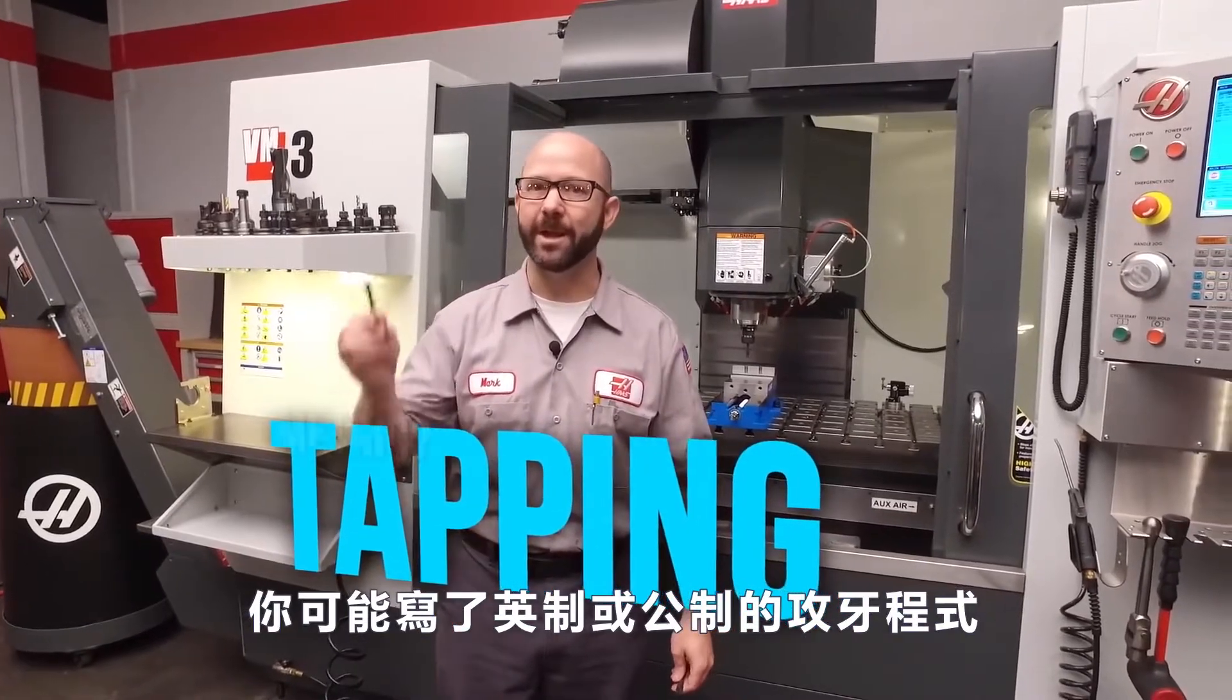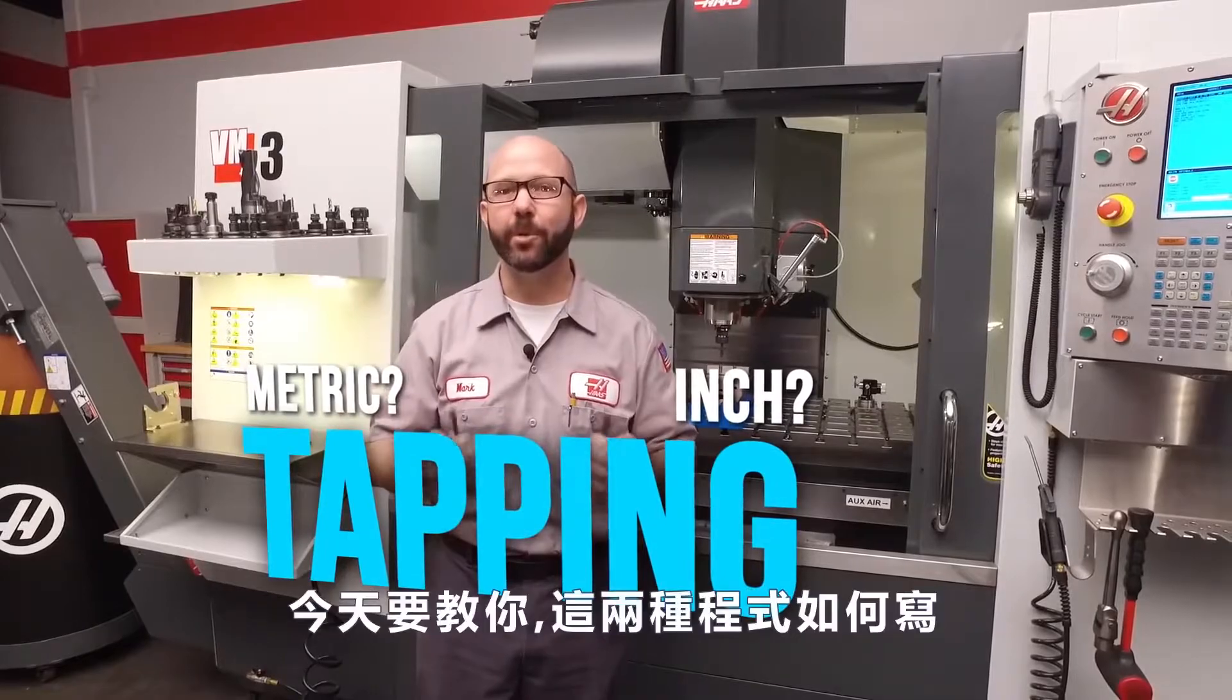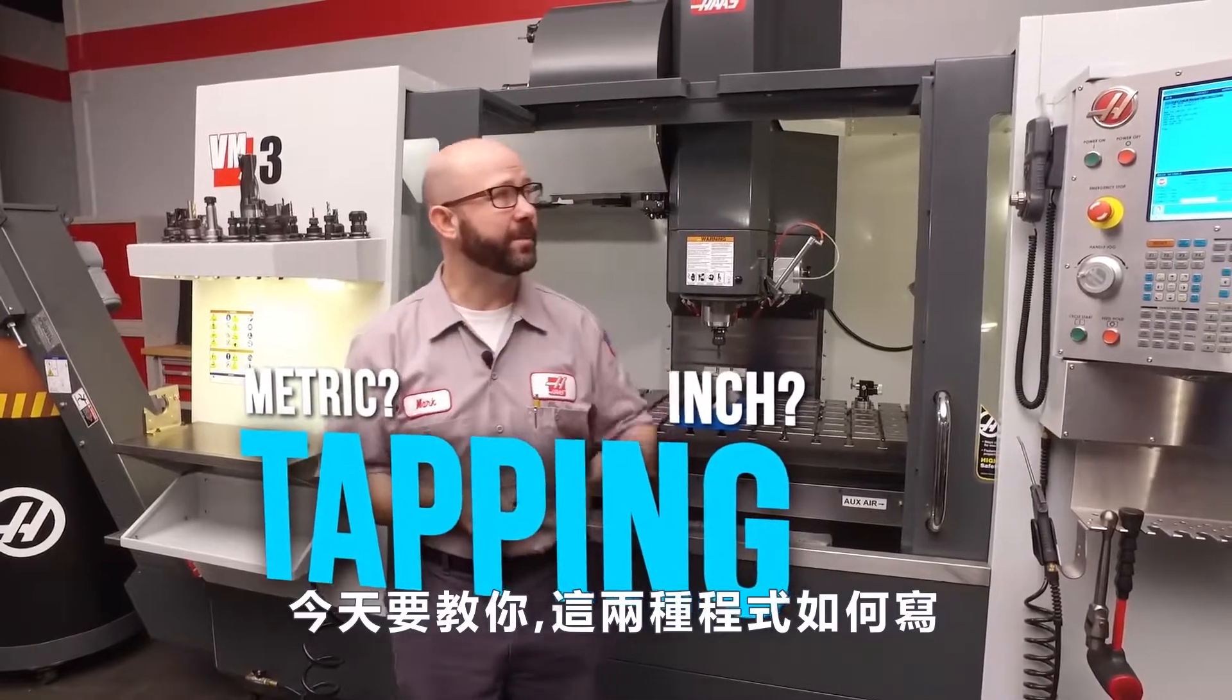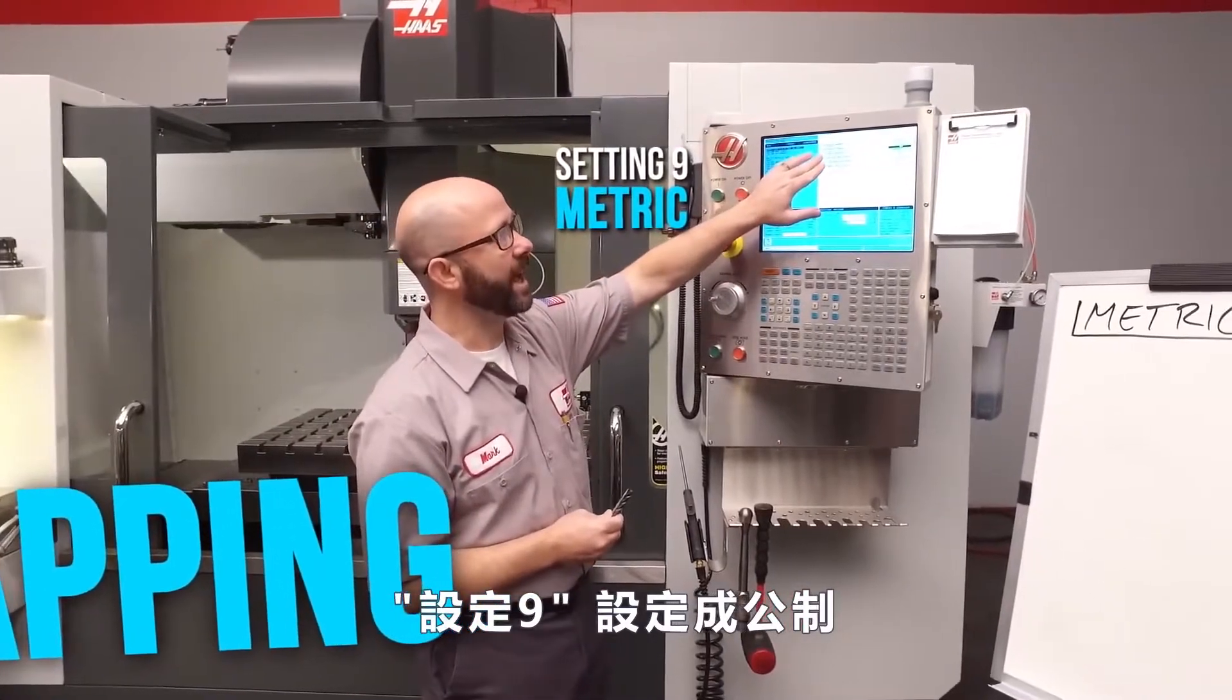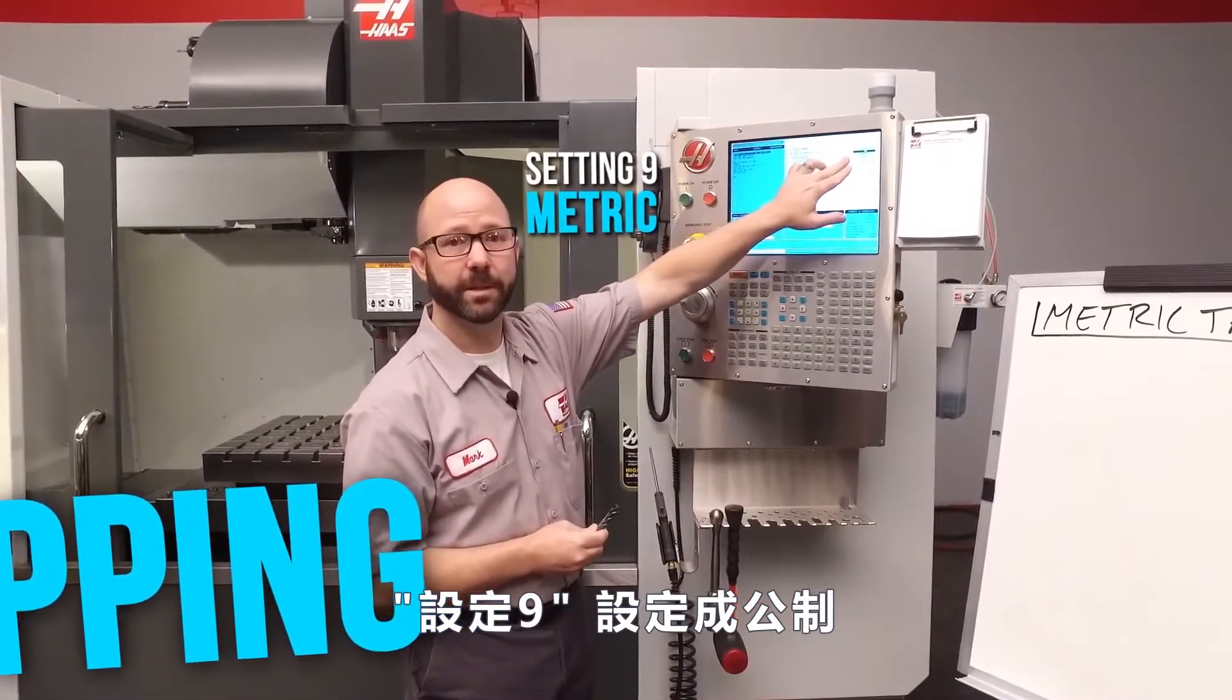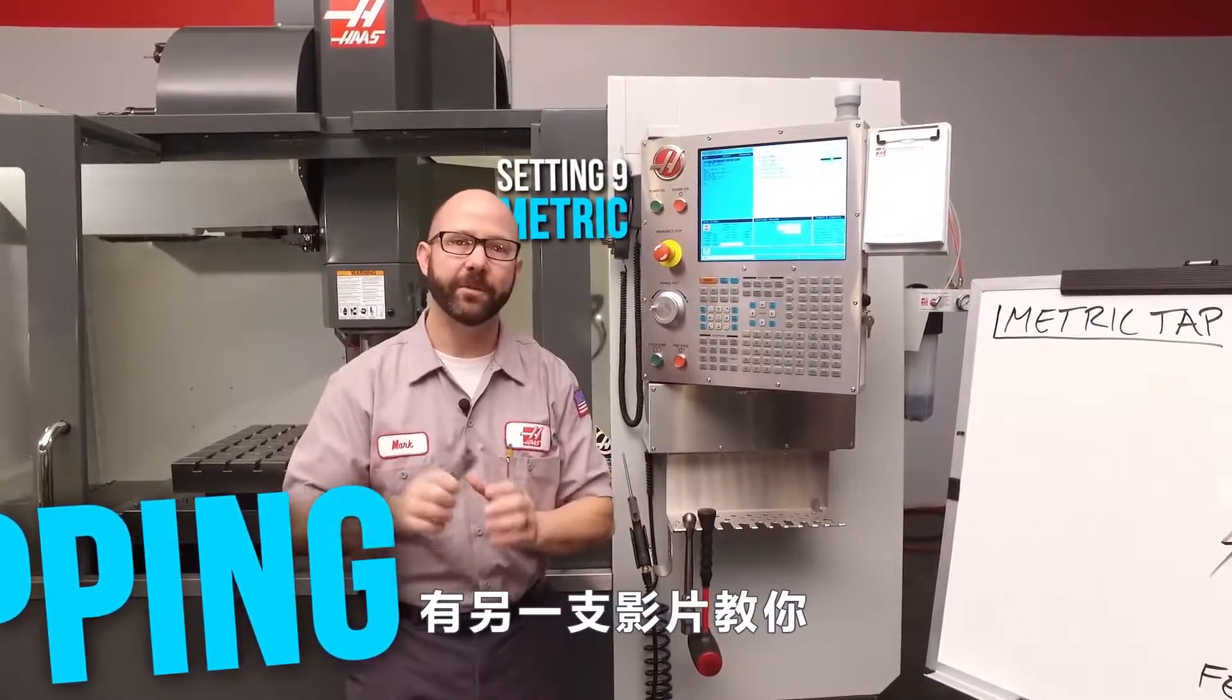You might be programming a metric tap or you might be programming an inch tap. Today we're going to show you how to do both on a machine that is set up in metric mode. We've got setting 9 dimensioning set to millimeters. If your machine is set to inch, then we've made a different video for you.